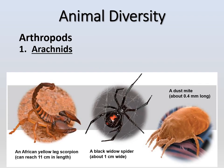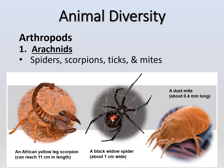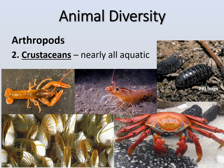Our first group of arthropods are arachnids: spiders, scorpions, ticks, and mites. Some of these are poisonous, some are not. You can see the varying sizes — dust mites are very small, whereas scorpions can get quite big, and spiders are various sizes as well.